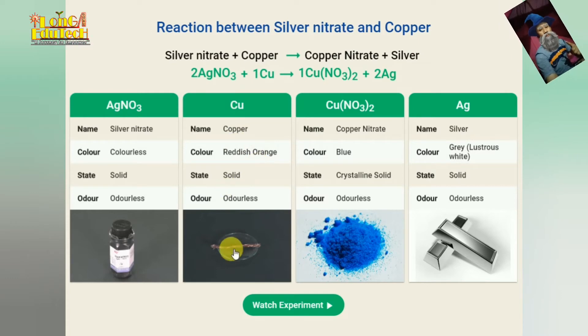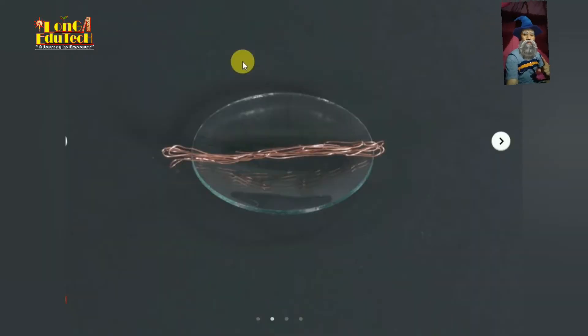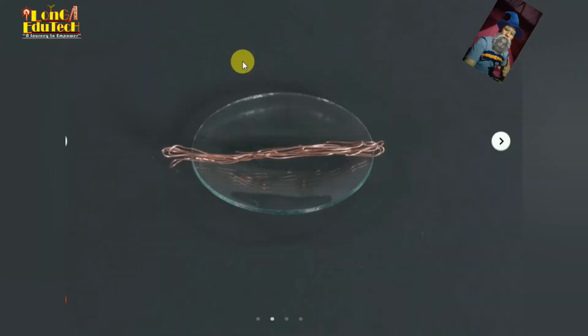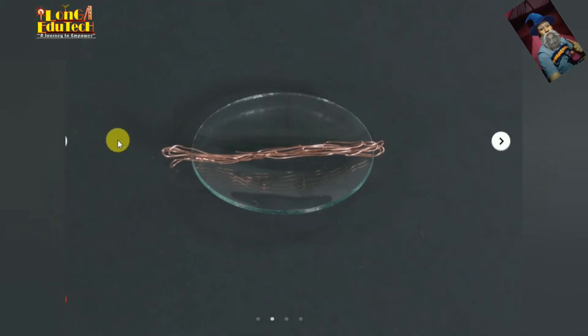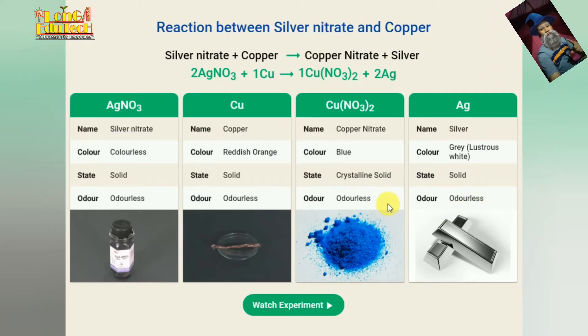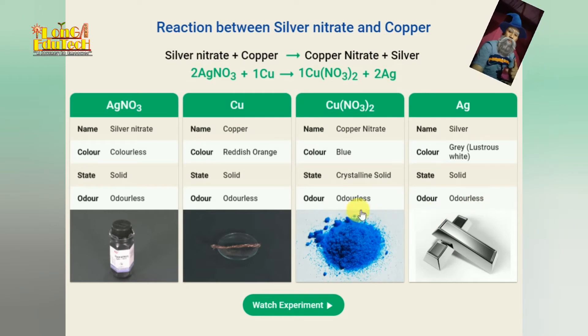Copper, as you know, is reddish orange and odorless solid. This is the copper, the brown in color as we know. Now comes to the copper nitrate.